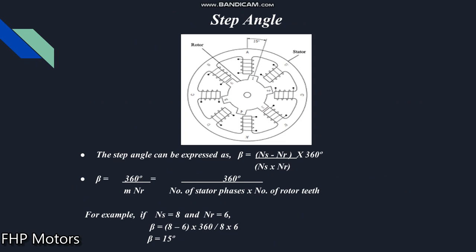But how to find out that step angle? Here you can see the stator having eight poles, and the internal part is the rotor which is rotating and has a number of teeth called rotor teeth. The step angle between these stator poles and the rotor teeth when the motor starts rotating in a step is called the step angle. The step angle can be expressed by the Greek letter beta, and is given by: beta equals (Ns minus Nr) upon (Ns into Nr) into 360. Here Ns means the stator poles, Nr means the rotor teeth, and 360 represents one complete rotation of the motor.